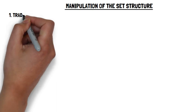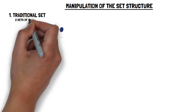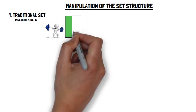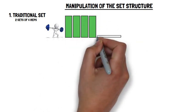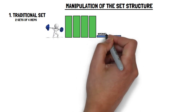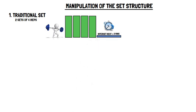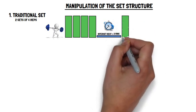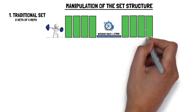Traditional sets are where repetitions are performed continuously with a pre-planned inter-set rest interval. For example, two sets of four repetitions in a traditional set would involve performing four reps one after the other, followed by an inter-set rest period — for example, three minutes — before performing the second set in the same manner, i.e. four repetitions, one after the other.